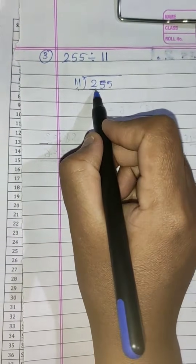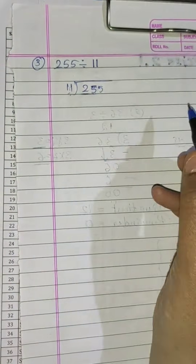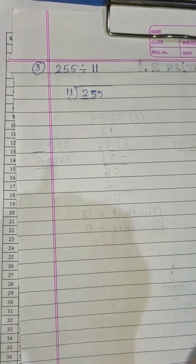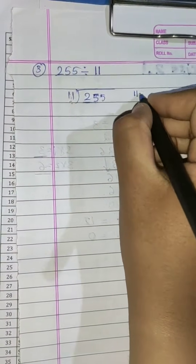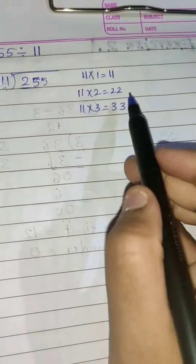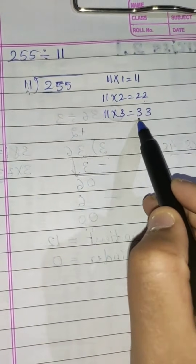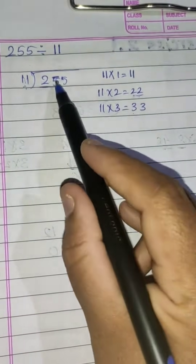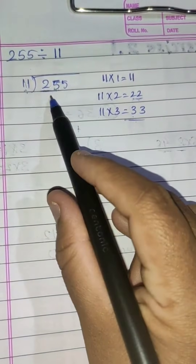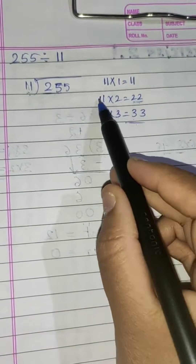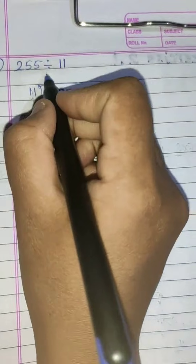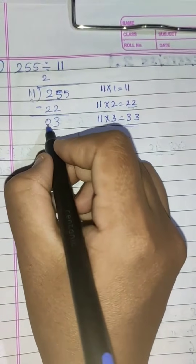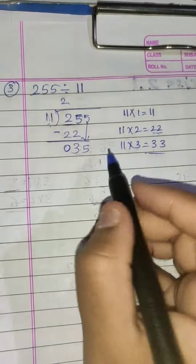Read the 11 times table until you reach 25: 11×1=11, 11×2=22, 11×3=33. Since 22 is less than 25 and 33 is more than 25, you take 22. So 11×2=22. Write 2 in the quotient and subtract: 5 minus 2 is 3, 2 minus 2 is 0. Bring down the next digit 5, making it 35.